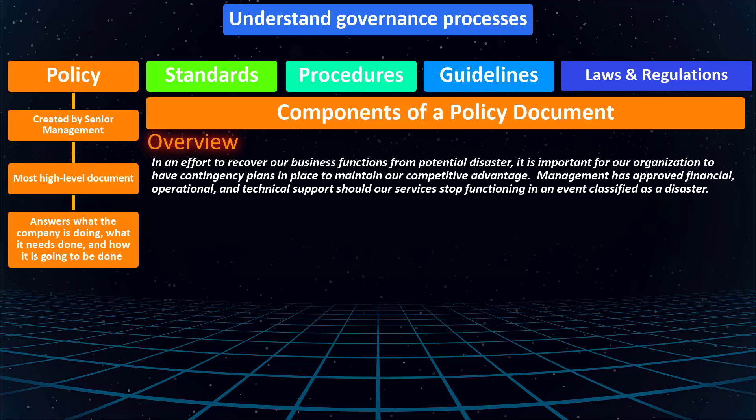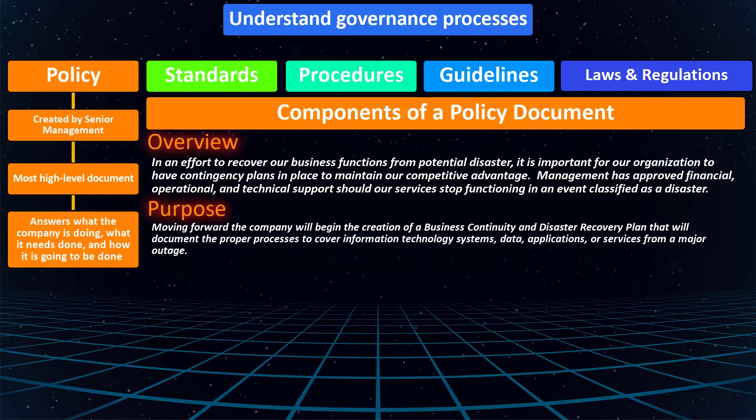In a policy document there might also be a purpose section stating: 'The company will begin the creation of business continuity and disaster recovery planning that will document the proper processes to cover information technology systems, data, applications, or services from a major outage.' As you notice, a policy doesn't mention anything specific — it's all high level.